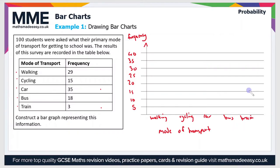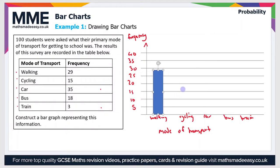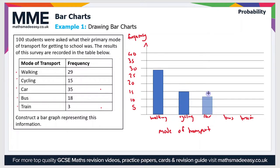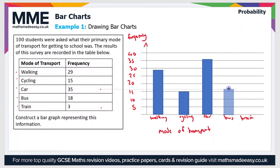Now I need to add the bars in. For walking, the frequency is 29, so let's add a bar with a height of 29. For cycling, we have a bar height of 15 — so 15 people cycle to school. For car, the most common answer, the frequency is 35. Then we have bus, with a frequency of 18. And finally the train frequency, the smallest, is 3.